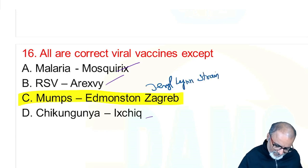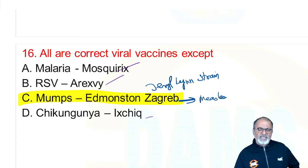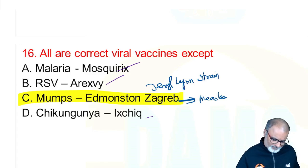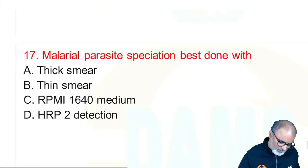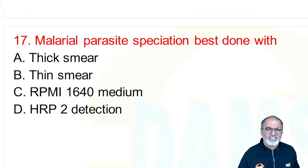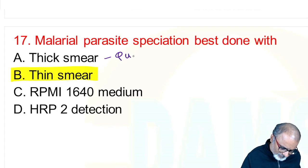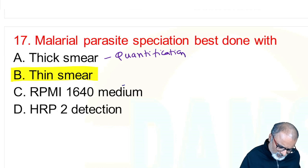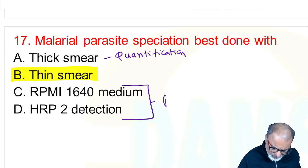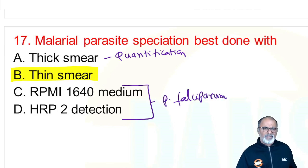Edmonston and Zagreb strains are vaccine strains for measles. For malarial parasite speciation, the best method is thin smear. Thick smear is used for quantification. These two findings are exclusive for Plasmodium falciparum.